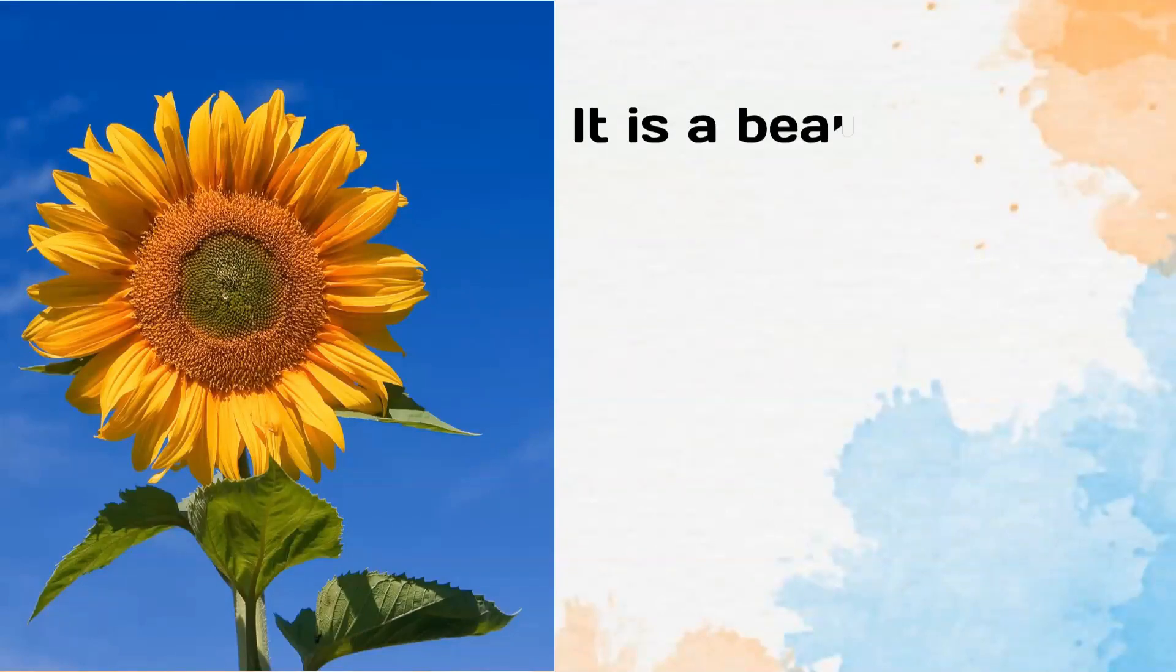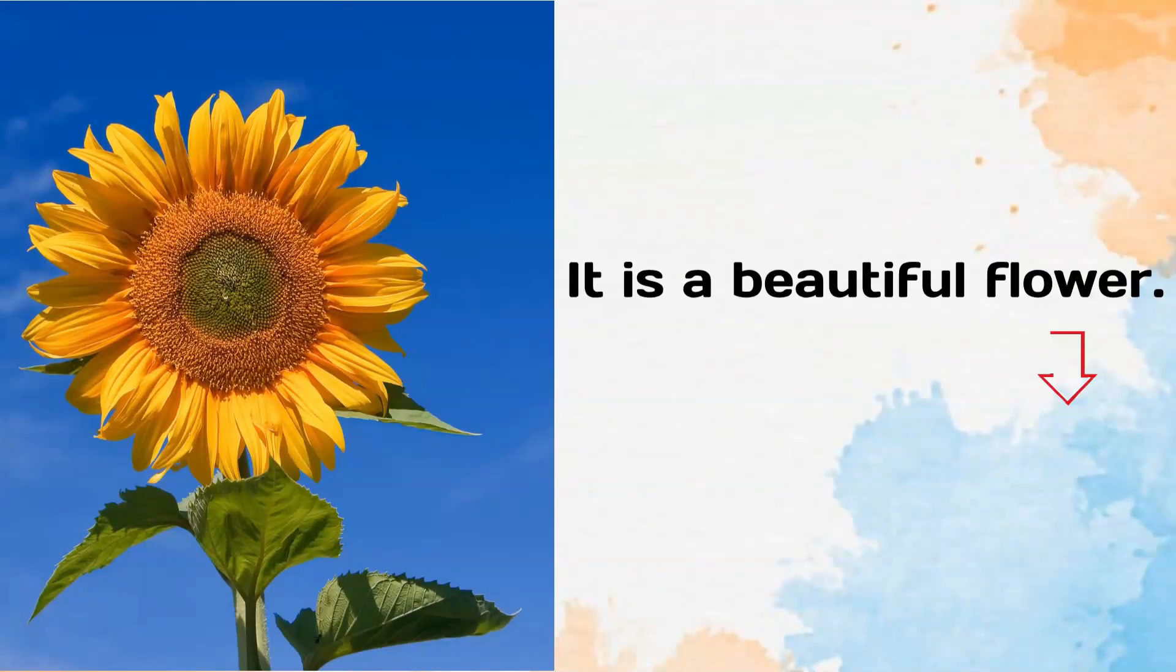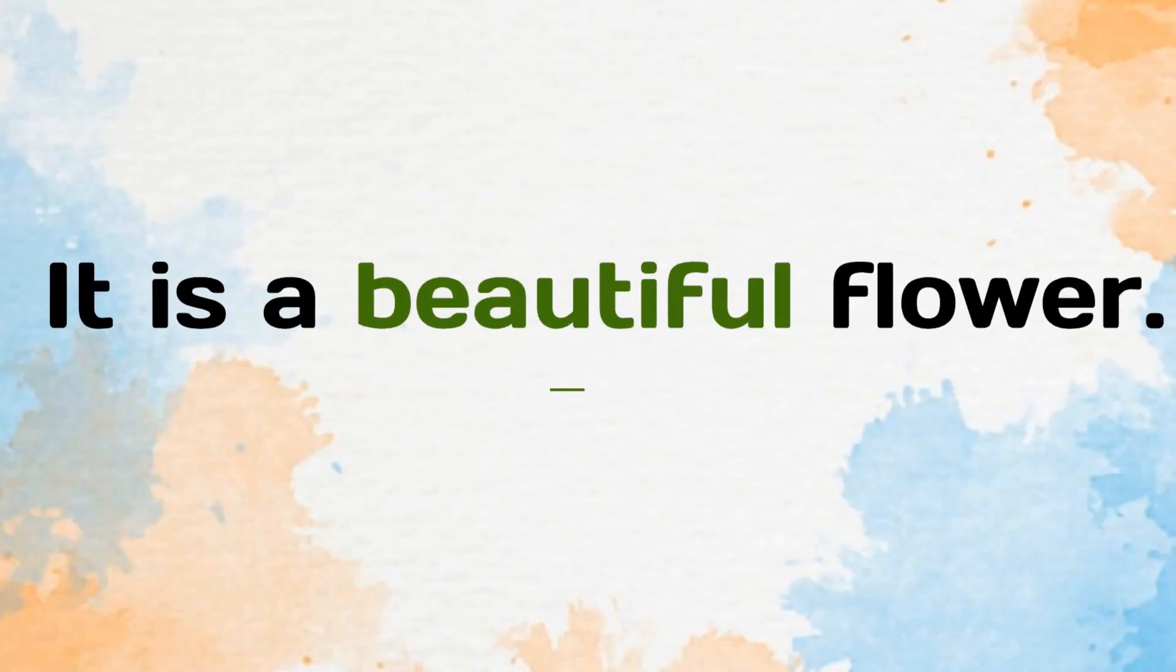Let's look at these sentences. It is a beautiful flower. It is yellow and it has many petals. Here, flower is a noun and beautiful is describing the appearance of the flower. So, beautiful is an adjective.